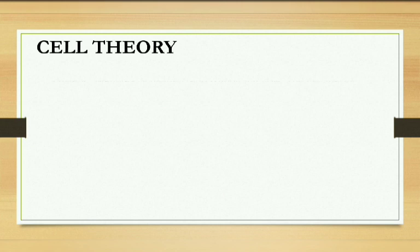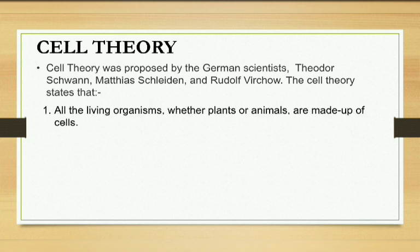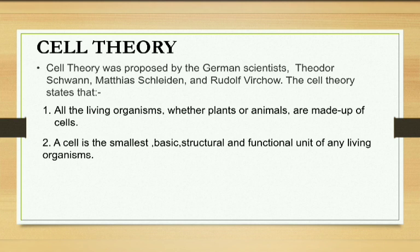Now come to cell theory. Cell theory was given by two scientists: Schleiden and Schwann. The cell theory has three points. The two points were given by Schleiden and Schwann, and the third — most important — point was given by Rudolf Virchow. The first point: all living organisms, whether plant or animal, are made up of cells, whether unicellular or multicellular.